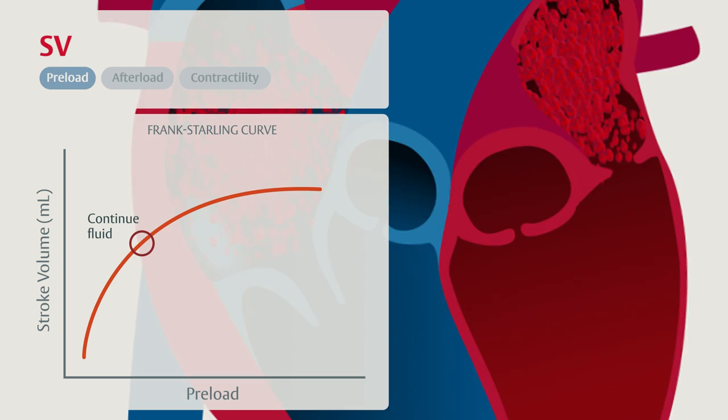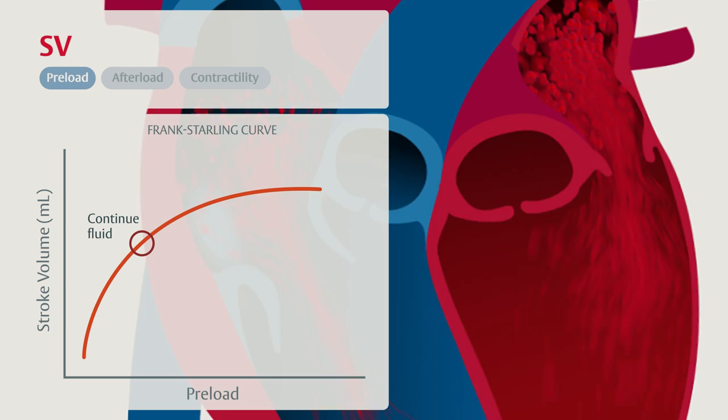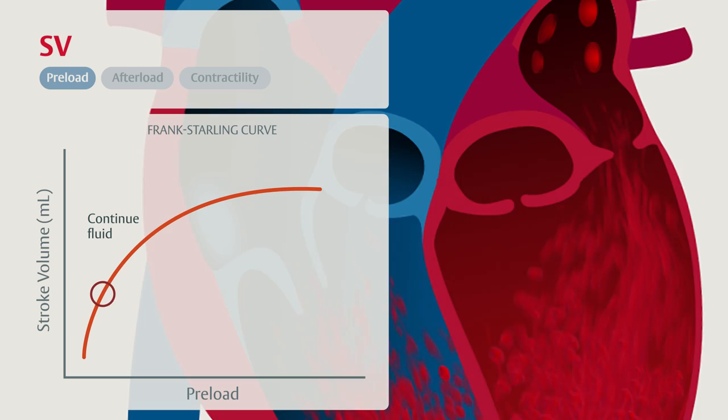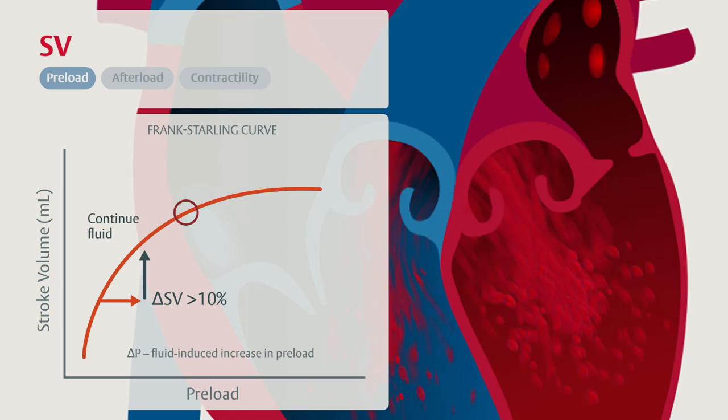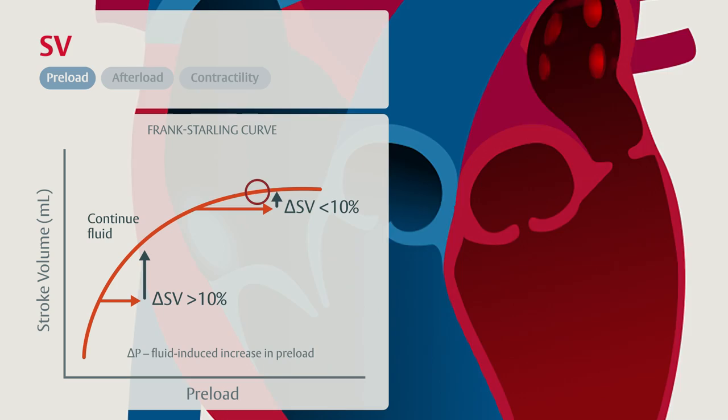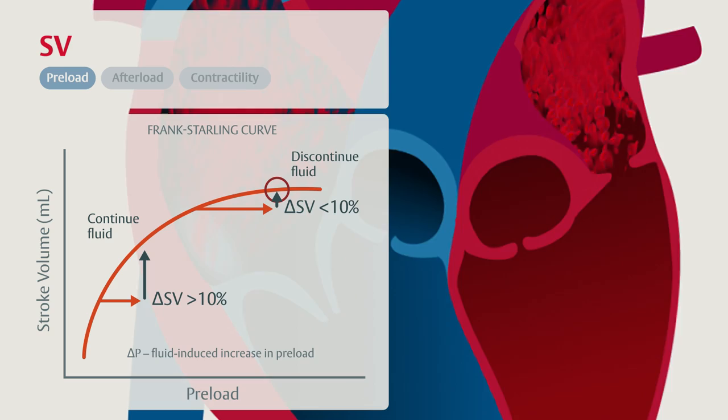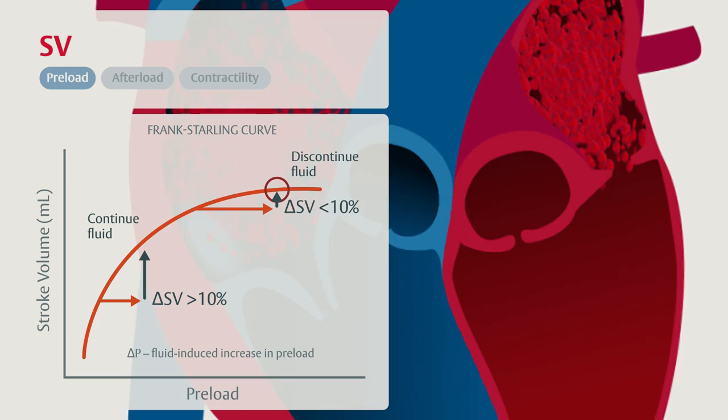Now let's return to normal and add more fluid to the ventricle. The goal of giving fluid to a patient is to increase preload and therefore stroke volume. It's important to make sure that the fluid you gave had its intended effect. If you gave a fluid bolus and the stroke volume increased by more than 10%, the patient was fluid responsive and may still be on the steep part of the Frank-Starling curve. If the patient's stroke volume did not increase by 10%, they were on the flat part of the curve and were not fluid responsive. Continuing to give fluid to patients who are not fluid responsive can push them to the far side of their Frank-Starling curve and ultimately contribute to heart failure.